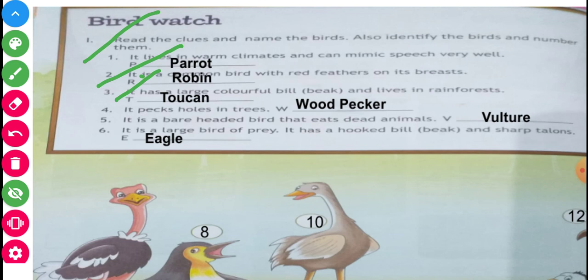It pecks holes in a tree — showed the picture: Woodpecker. W — already clue word, characters also here. See and observe: Woodpecker — you will write down as it.